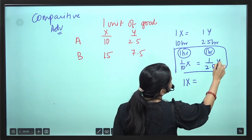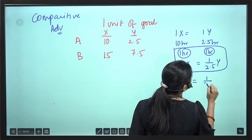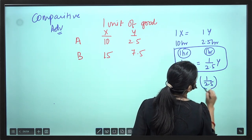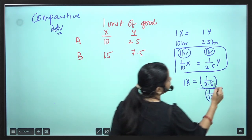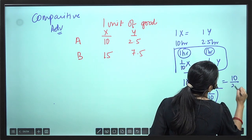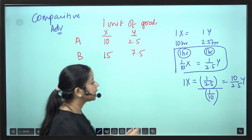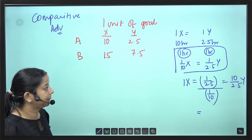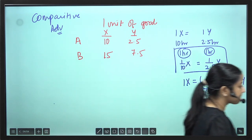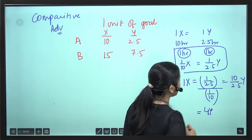1/10 of X is equal to 1/2.5 of Y in 1 hour. So 1X will be (1/2.5) divided by (1/10), which is 10/2.5 Y, which equals 4. So 1X equals 4Y.